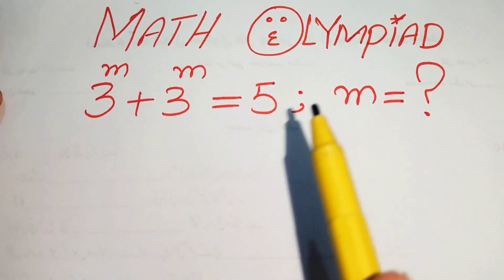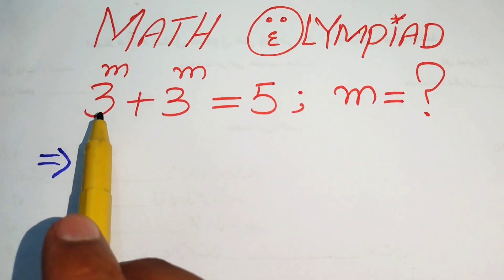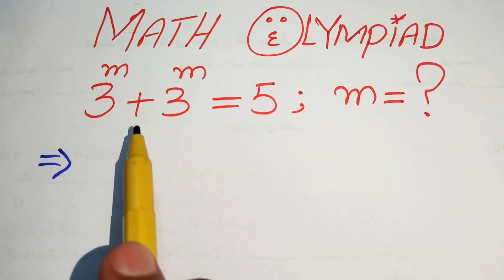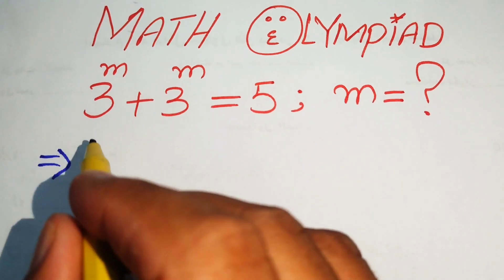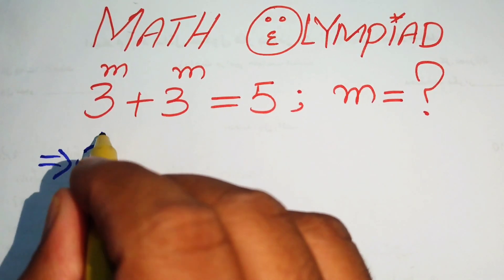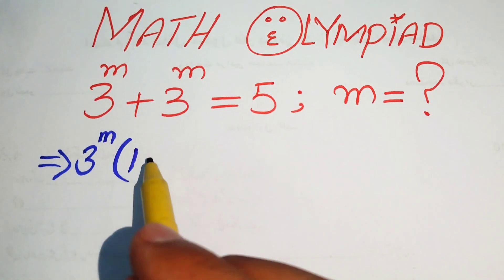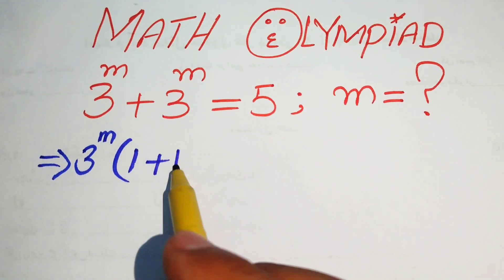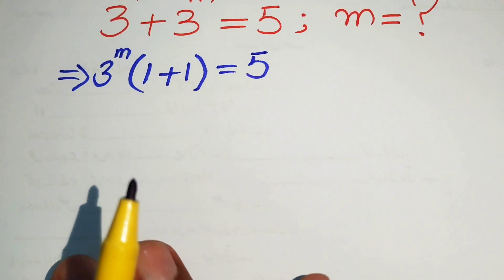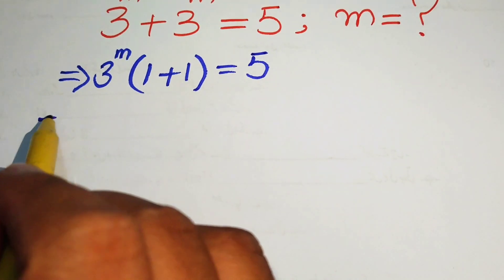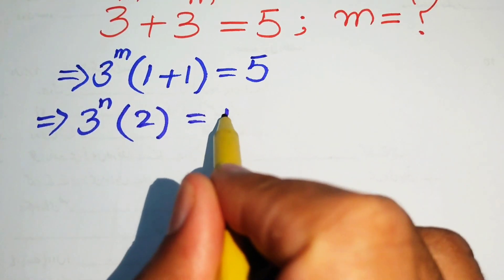The first thing we do is identify 3 to the power of m as the common term on the left hand side. We take out 3 to the power of m as a common factor, giving us 3^m times (1 + 1) equals 5, which simplifies to 3^m times 2 equals 5.